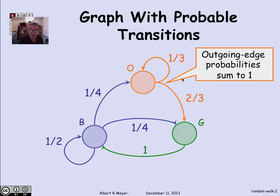So let's fill in the rest of the graph in a legal way. Here we have B with a half probability of going from B to B, a quarter from B to O, and a quarter from B to G. And the green state is certain in one step, if you're at green, to go to blue next. There's only one edge out. It has probability 1.